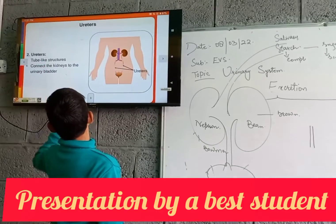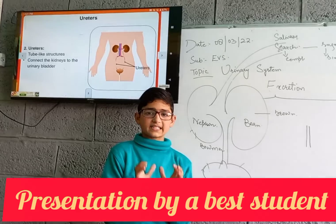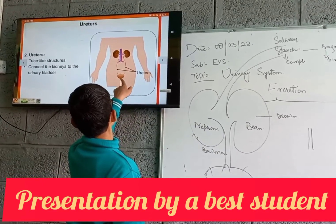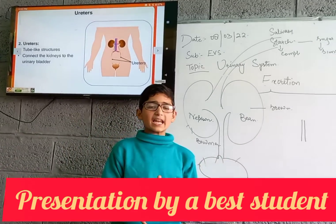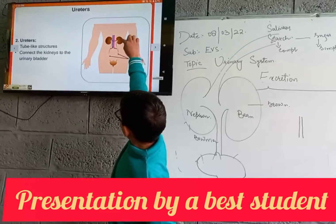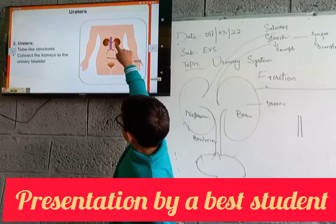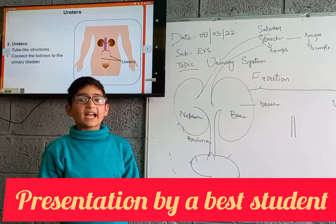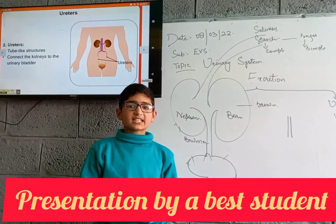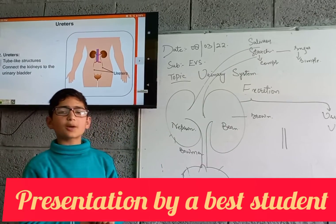The second part is the ureters. Ureters are small tube-like structures connected to the kidneys and the urinary bladder. They help in taking the urea from the kidneys to the urinary bladder. Inside the ureters, there happens a peristaltic movement — contraction or expansion — which helps to move the urea from the kidneys to the urinary bladder.